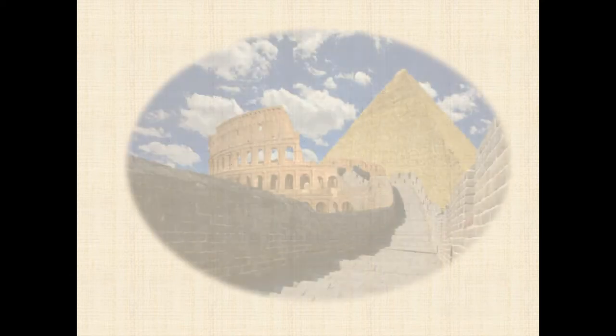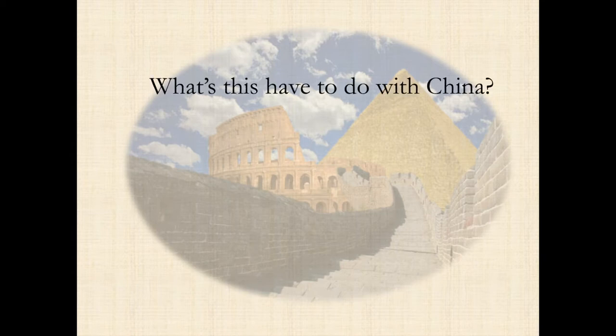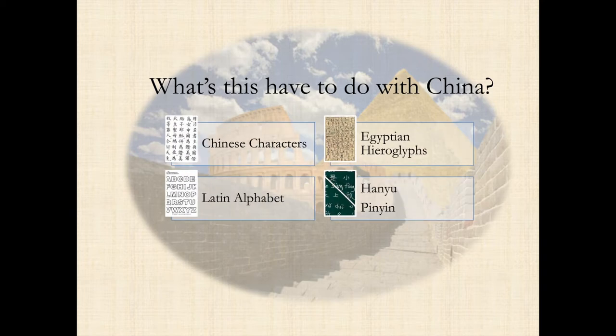In this conference we're talking about the Romanization of Chinese characters and where that Romanization comes from. So the question is, when we talk about Egypt, Italy, Rome, the Latin culture, or the Phoenicians — what does that have to do with China? We have Chinese characters, Egyptian hieroglyphs, the Latin alphabet, and Hanyupinyin. How do these four things relate? How are they connected?